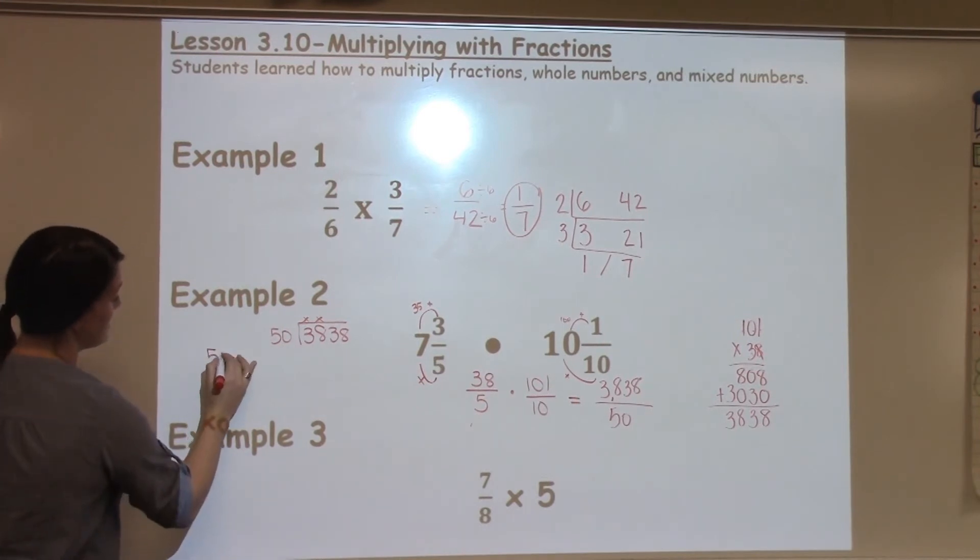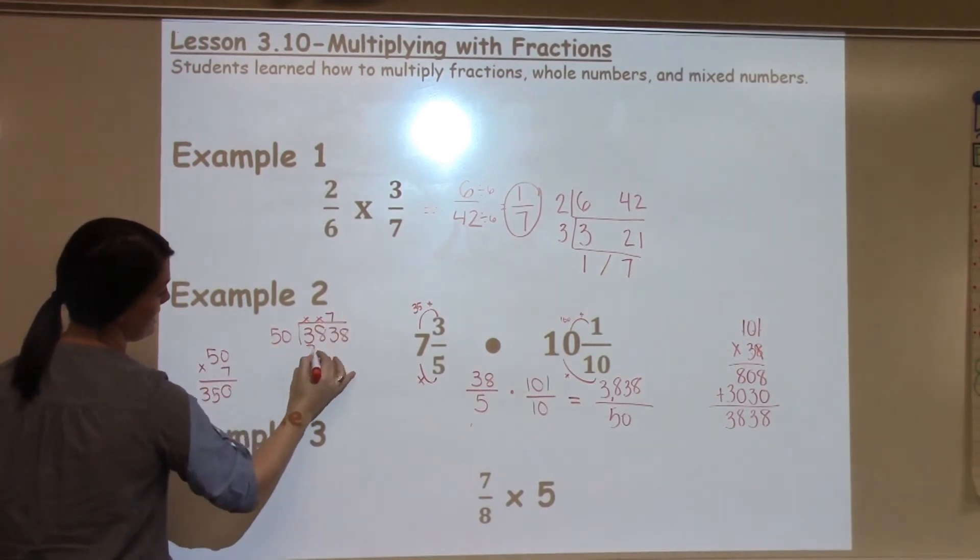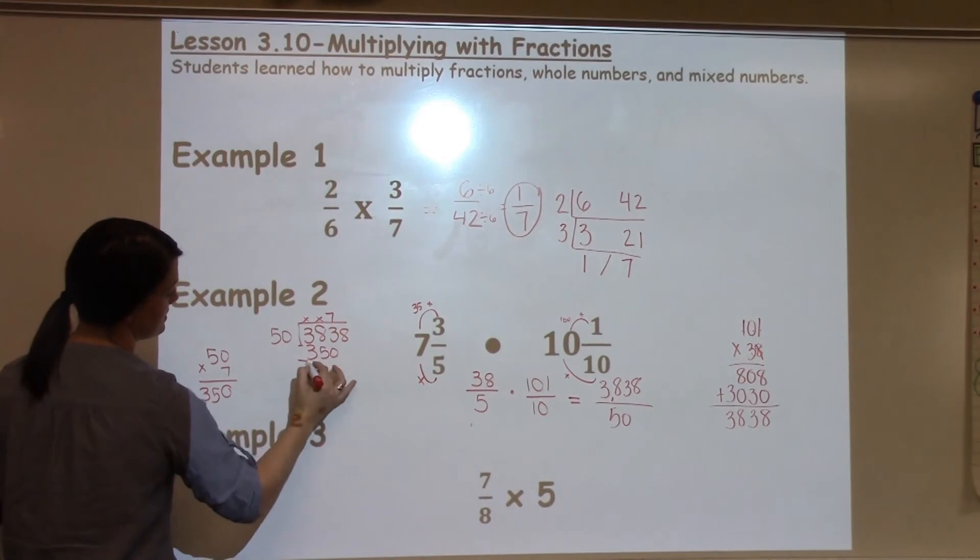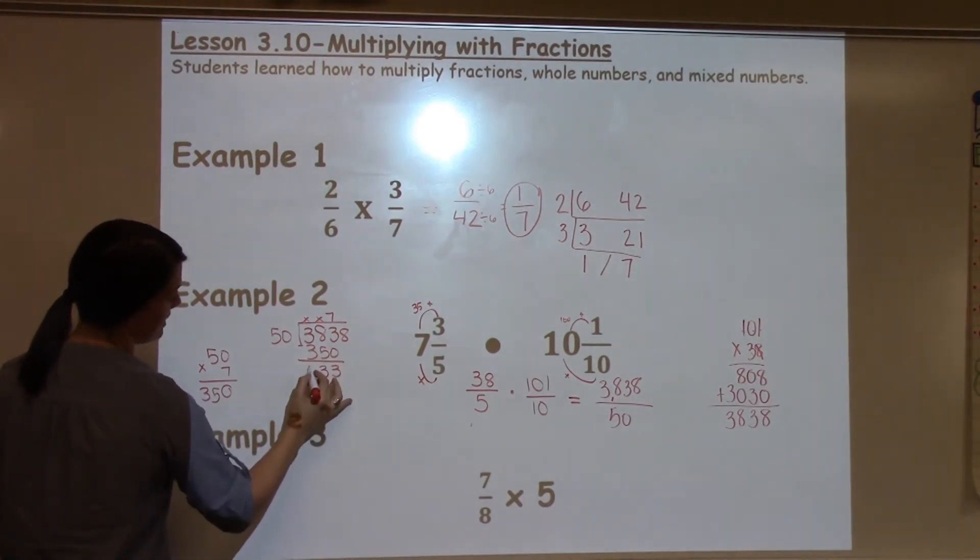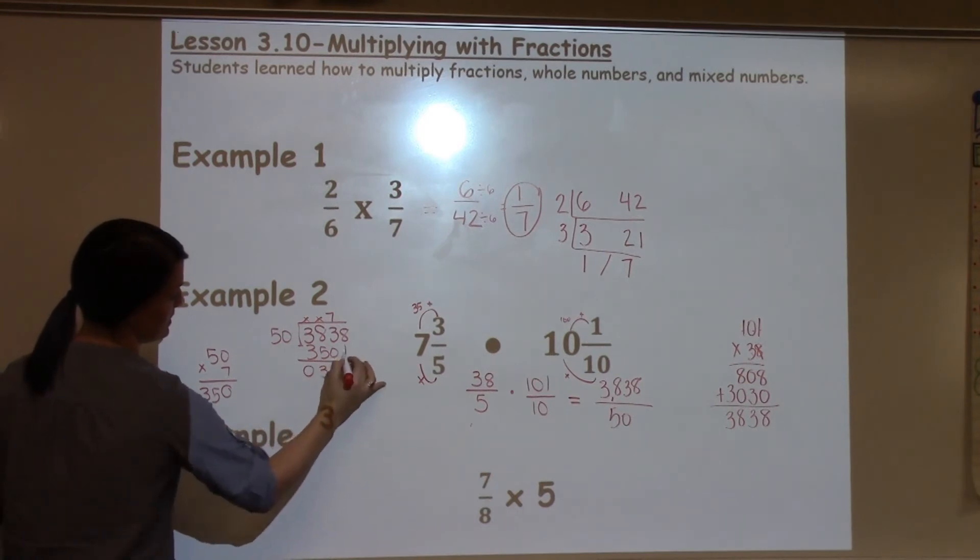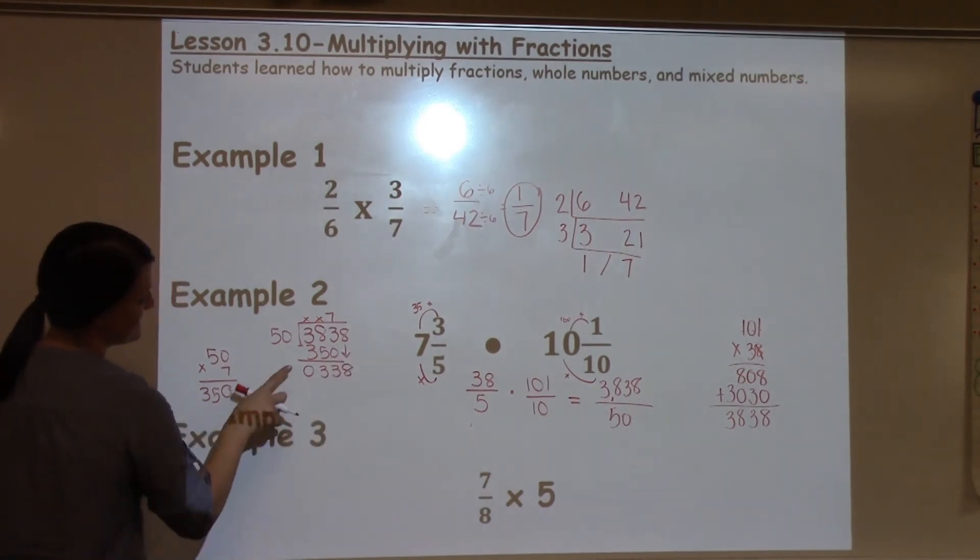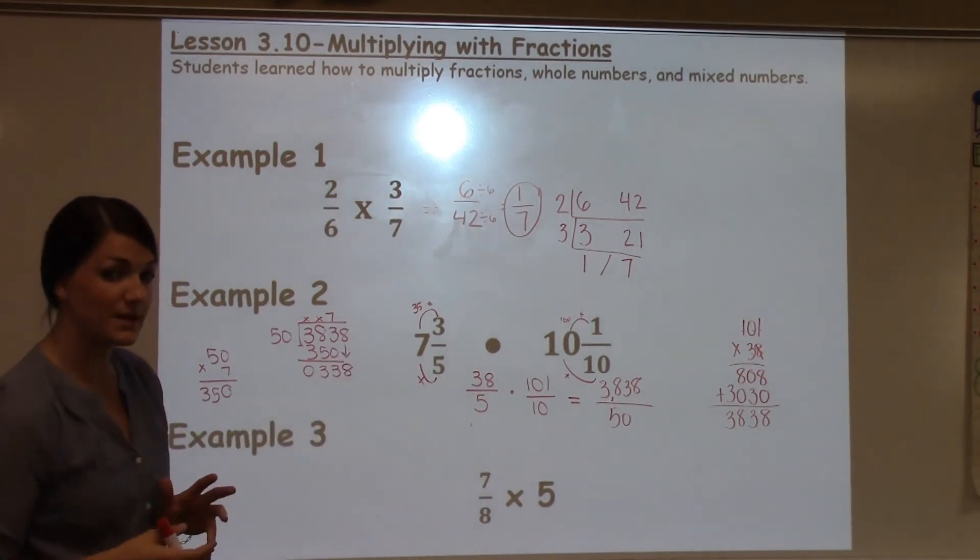So I'm going to try 50 times 7, and it gives me 350, which is pretty close. 3 minus 0 is 3, 8 minus 5 is 3, 3 minus 3 is 0. I bring down my 8. Now 338 is what I want now.